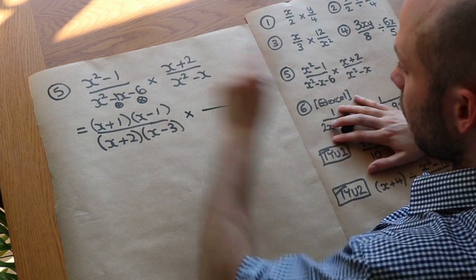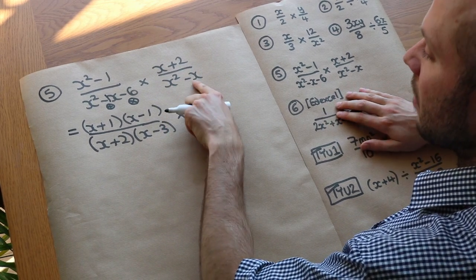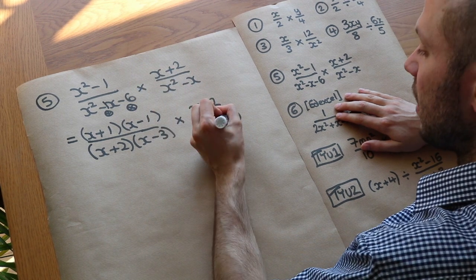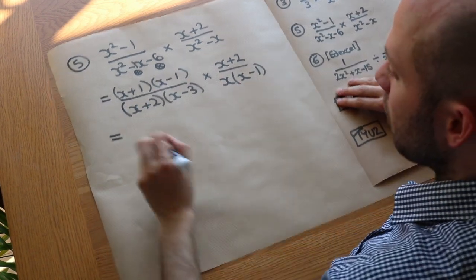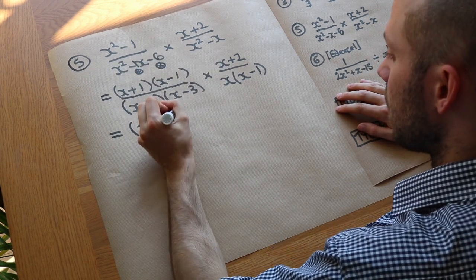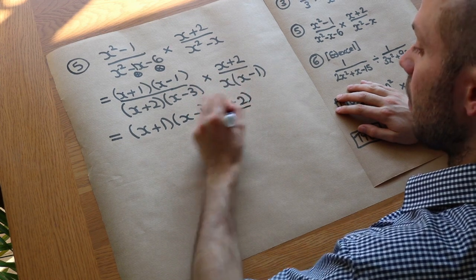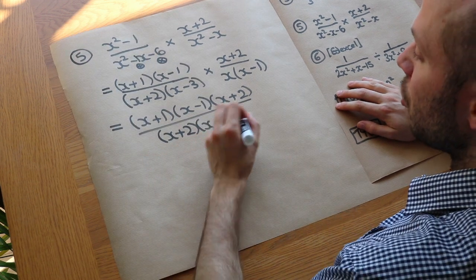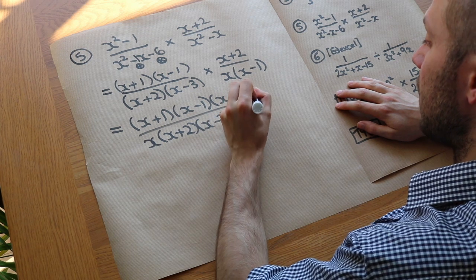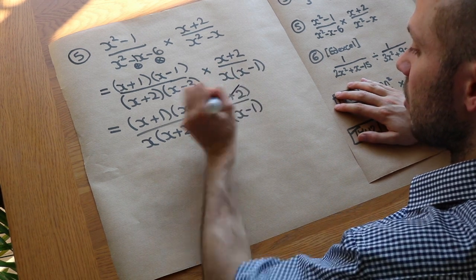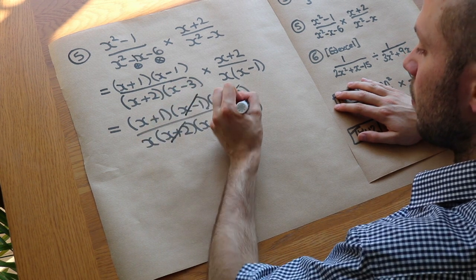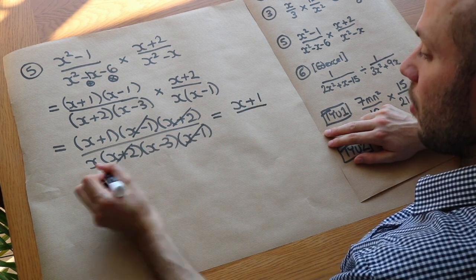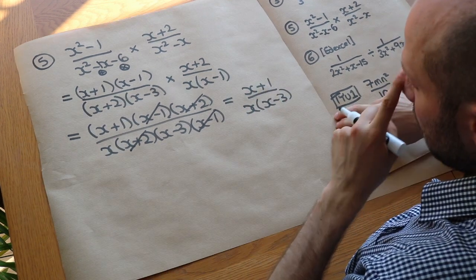The second fraction's numerator, x plus 2, stays as is. The denominator x squared minus x has a common factor of x, factorising to x(x-1). Writing it all as one fraction: the numerator is (x+1)(x-1)(x+2), and the denominator is (x+2)(x-3) times x(x-1). The (x+2) and (x-1) terms cancel from top and bottom, leaving x plus 1 over x(x-3). There's no need to expand — leave it factorised. That is the final answer.